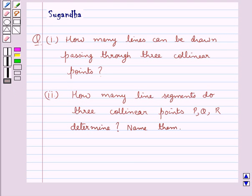Hello and welcome to the session. In this session we discuss the following question: How many lines can be drawn passing through three collinear points? The second part of the question says: How many line segments do three collinear points P, Q, R determine? Name them.